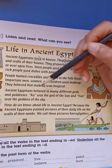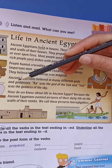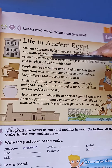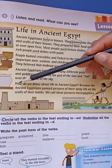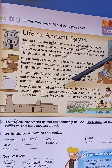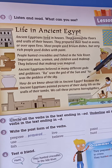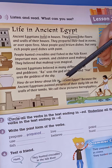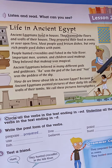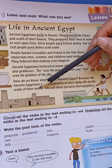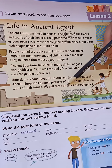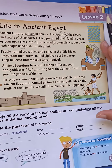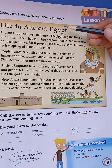Ancient Egyptians believed in many different gods. Ra, for example, was the god of the sun, and Nut was the goddess of the sky. How do we know about life in ancient Egypt? Because the ancient Egyptians painted pictures of their daily life on the walls of their tombs. We call these pictures hieroglyphics. Now we know a lot of information about life in ancient Egypt.